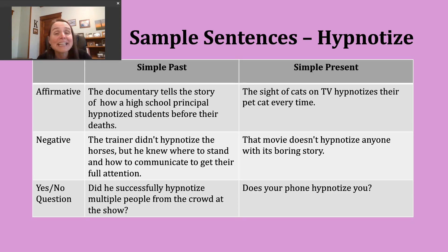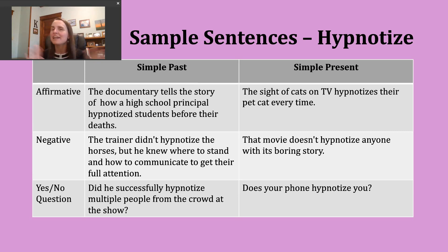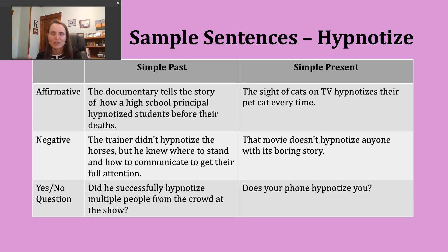To make a yes or no question in the simple present, start with 'do' or 'does,' then your subject, then the base verb. Remember, the only time we add an S to the end of the verb is in affirmative sentences when the subject is he, she, or it. Here's the last example: 'Does your phone hypnotize you?' — referring to that second definition of fascinating you and getting all of your attention.